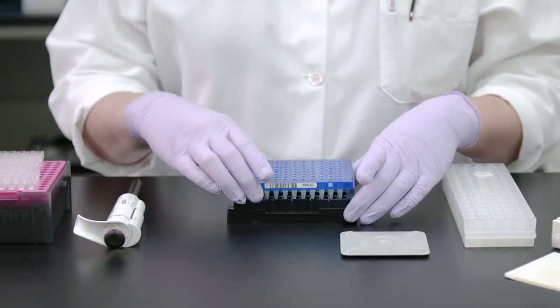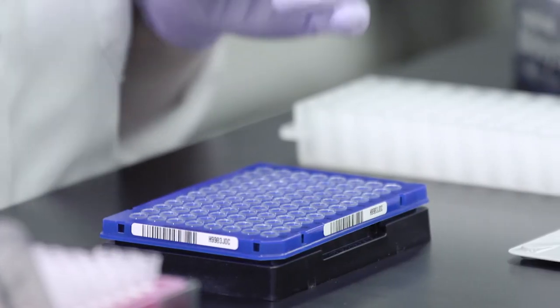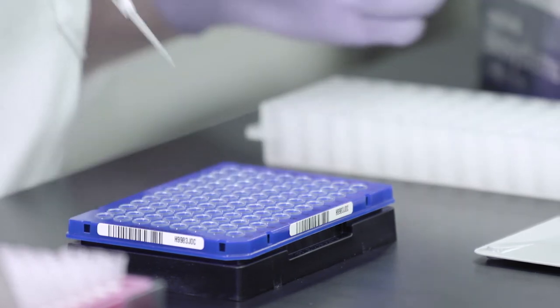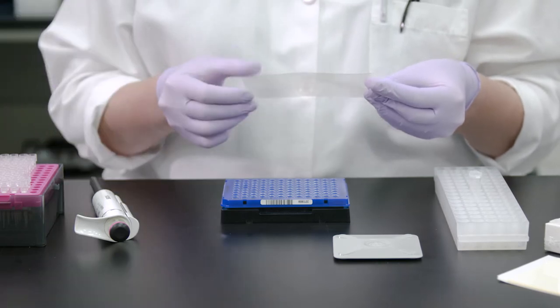To begin, place your PCR reaction plate in the plate rack. After pipetting your PCR samples into each well, remove one of the adhesive plate seals from the package. Remove the backing of the adhesive film.